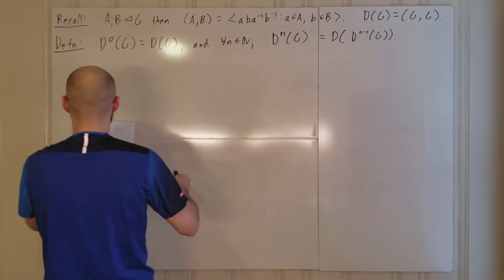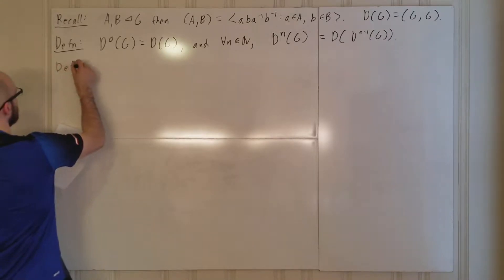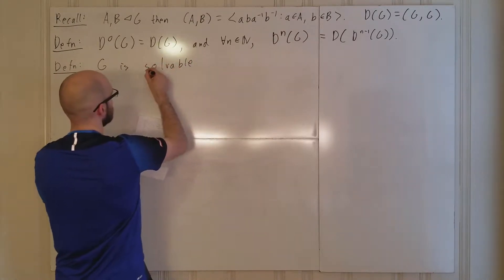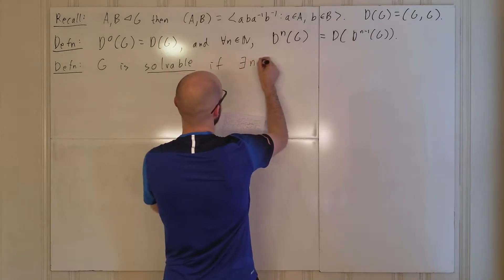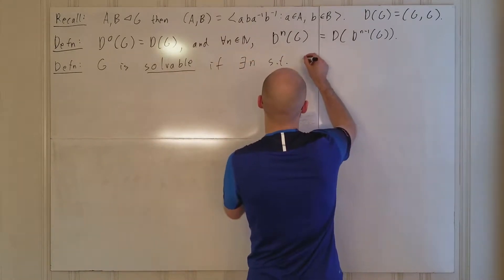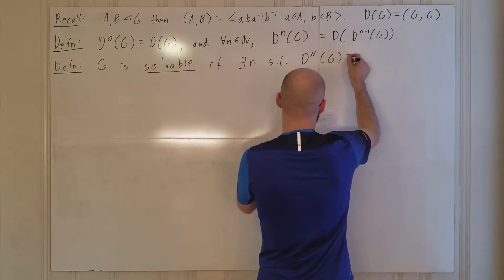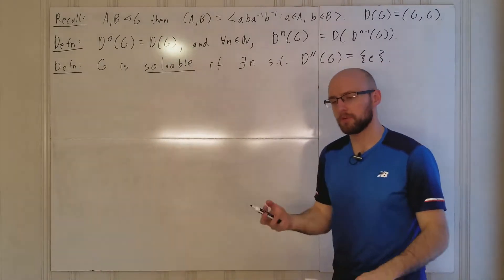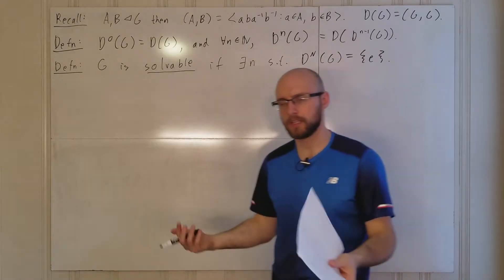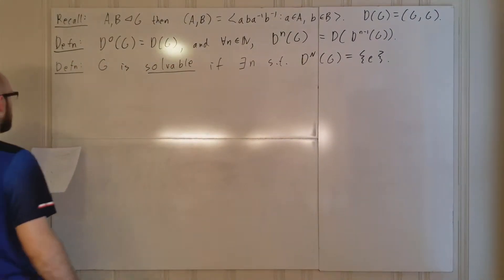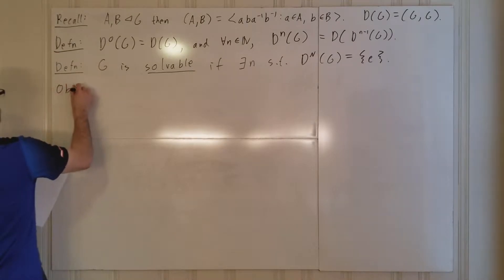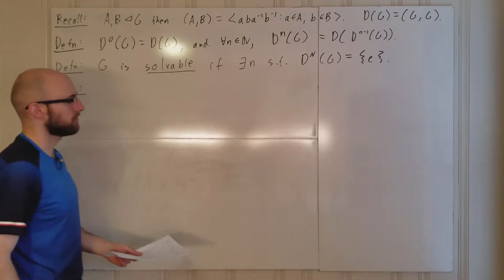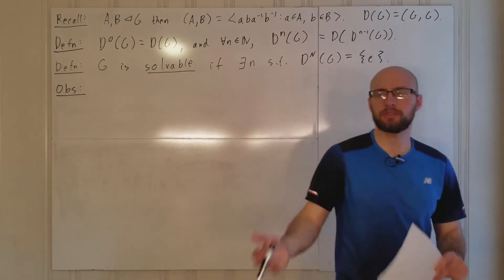Let's talk about solvable groups. G is solvable if there exists an n such that Dⁿ(G) is trivial. So you keep taking commutator subgroups, and if you eventually reach the identity, the group is solvable. Let's make some observations — what are examples of solvable groups, and which groups are not?